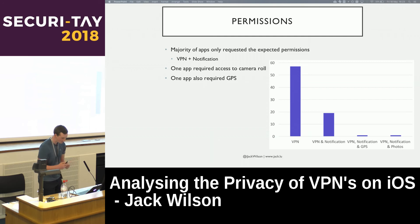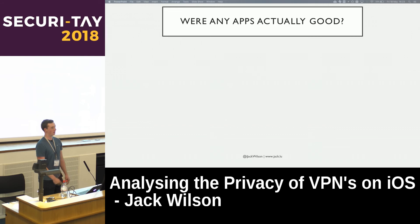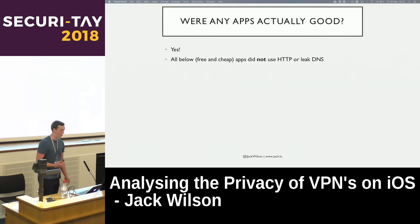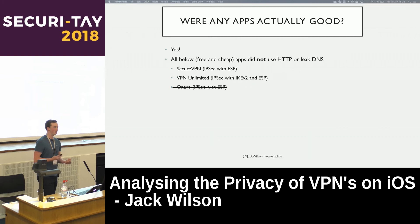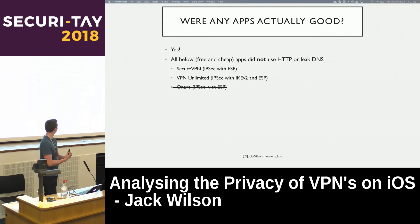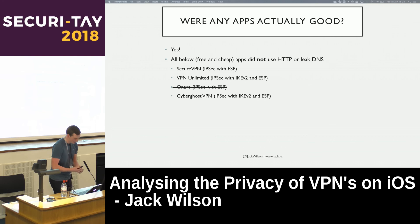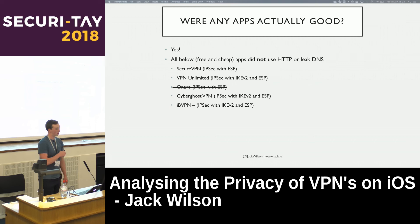So were any apps actually good? Yes, surprisingly, there were a few. All of the following apps are free or cheap, didn't use HTTP, and didn't leak DNS: Secure VPN, VPN Unlimited, Onavo — which by the technical definition was secure, but it's owned by Facebook who log all your traffic for analytics, so whether you want to give even more data to Facebook is up to you — CyberGhost, and IBVPN. These were all cheap or free and generally decent from the testing methodology.